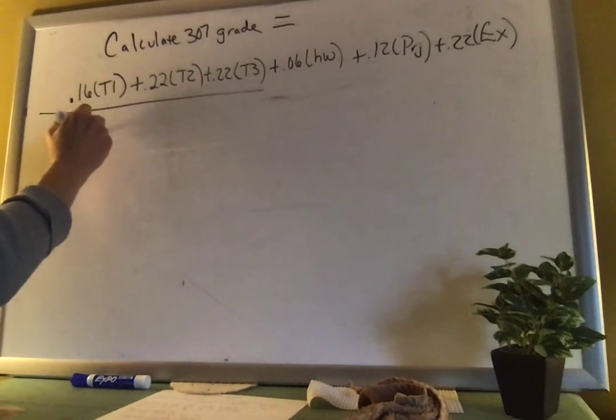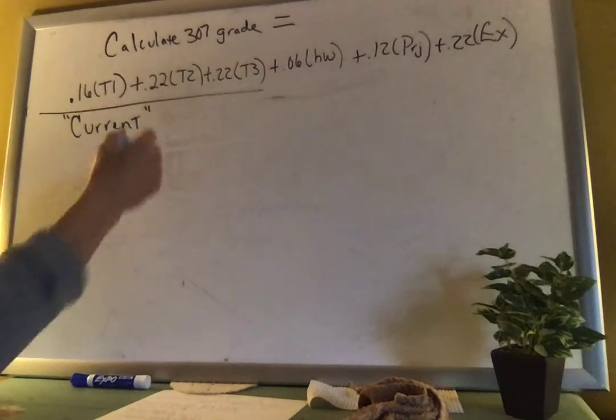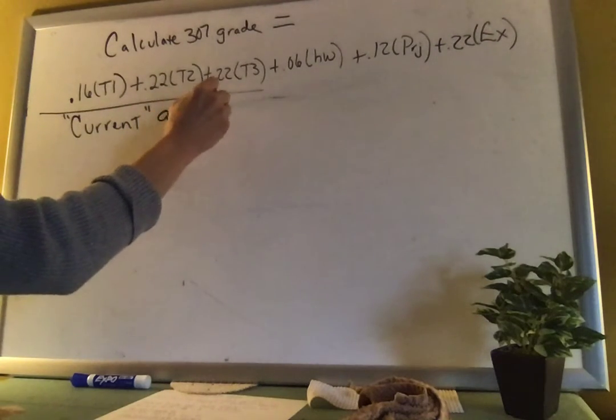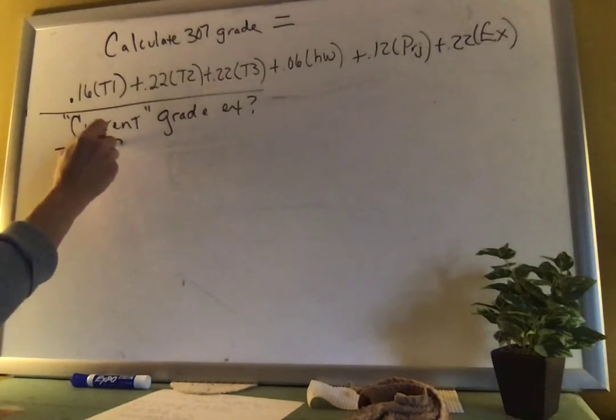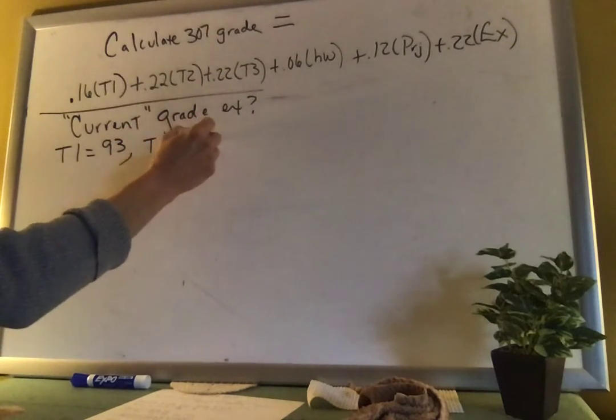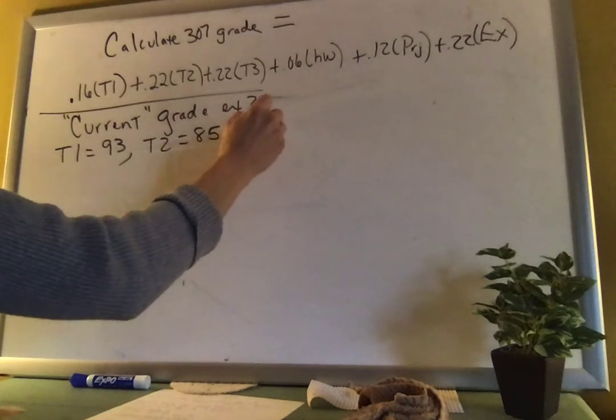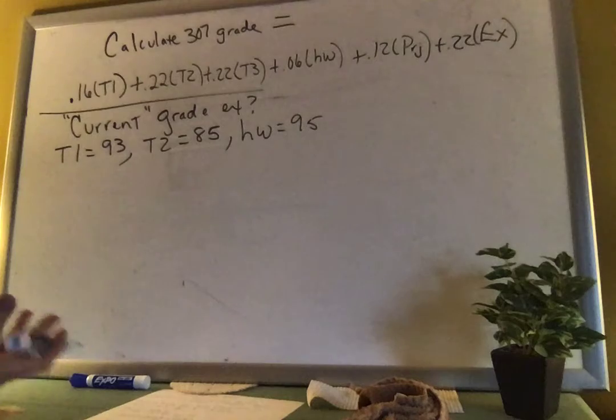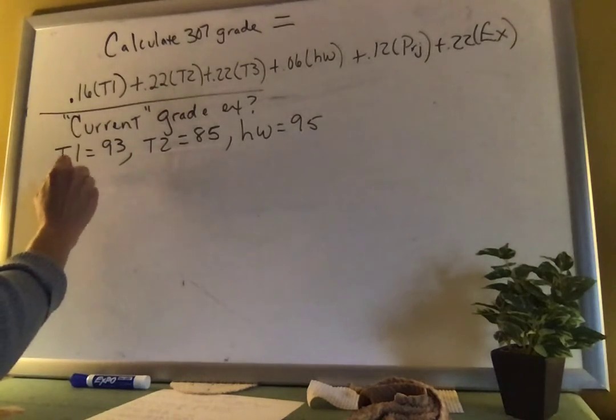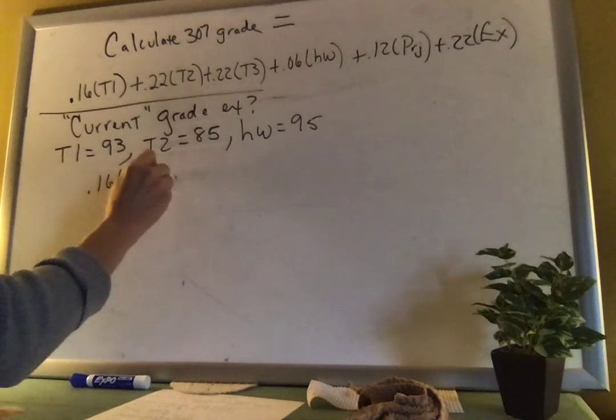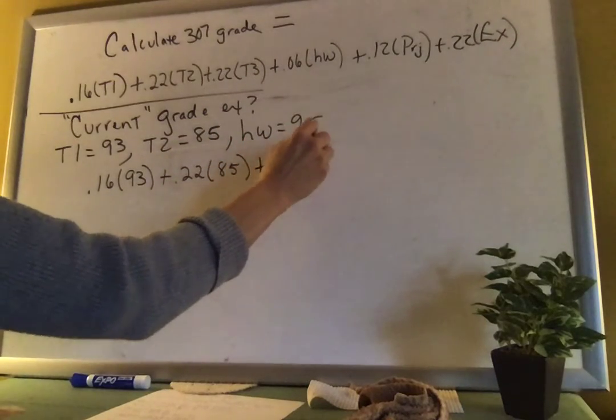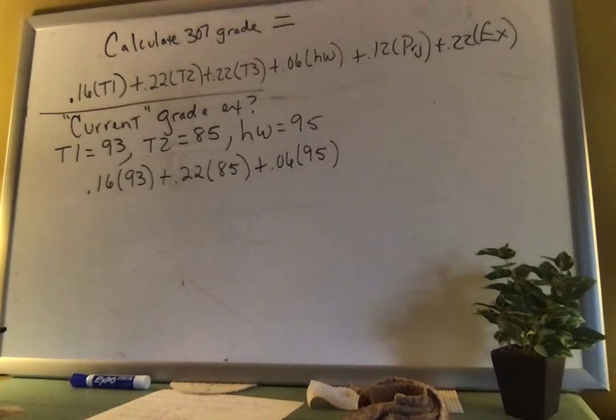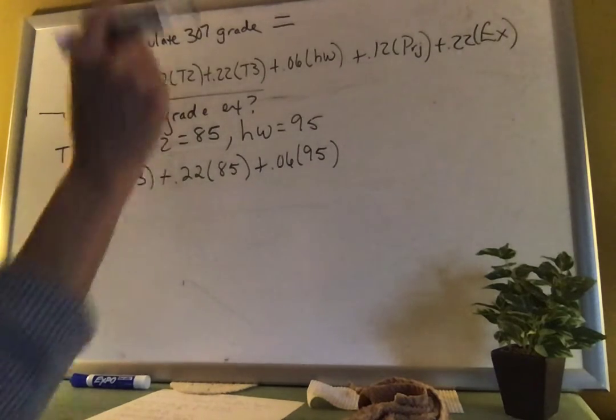Other students on any given day would like to know, what do I currently have in your class? Maybe it's like March 1st or April 1st, and you want to know your current grade. So let's just run through a little example. Let's say on test one, you made a 93. Let's say on test two, you made an 85. Homework, you have an average of a 95 so far. And those are the only grades that you have. All right, let's use my formula, 0.16 times 93 plus 0.22 times 85 plus 0.06 times 95.